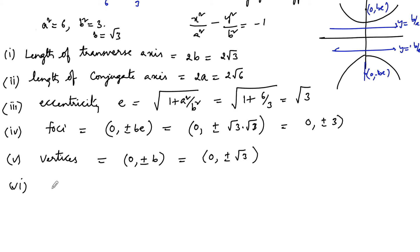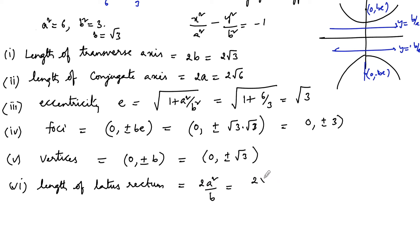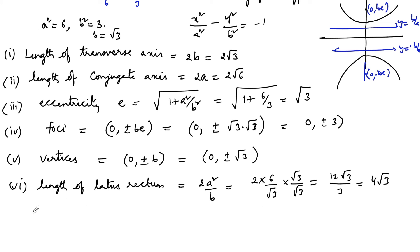The length of the latus rectum equals 2a²/b, which is 2 × 6 / √3. Multiplying and dividing by √3 gives 12√3 / 3, which equals 4√3. So the length of the latus rectum is 4√3 units.